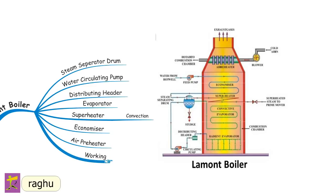In the working of the La Mont boiler, feed water passes through the economizer to the drum, from which it is drawn by the circulation pump. The pump delivers the feed water to the tube evaporating section. The circulating water is about eight to ten times the steam evaporated. Steam in the drum is a mixture of steam and water, which is drawn through a convection superheater, and the superheated steam is supplied to the prime mover. The working pressure is 170 bar with capacity up to 50,000 kg/hr at 500°C.